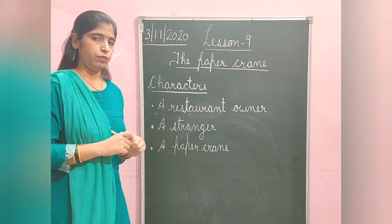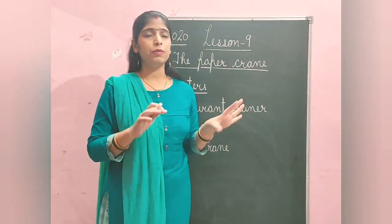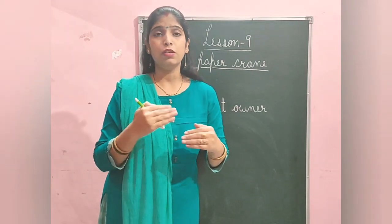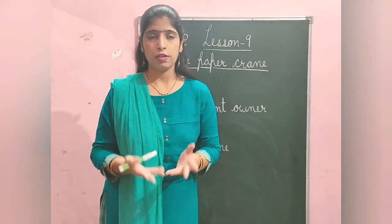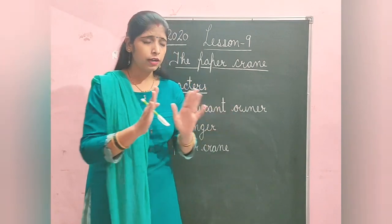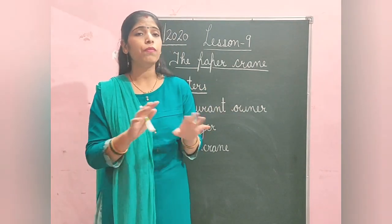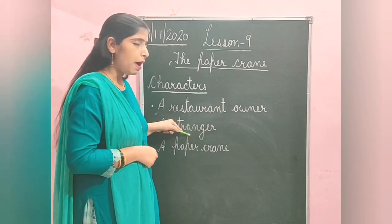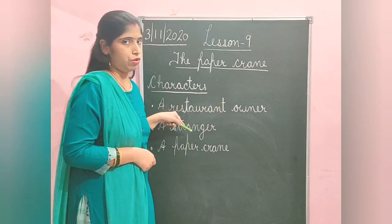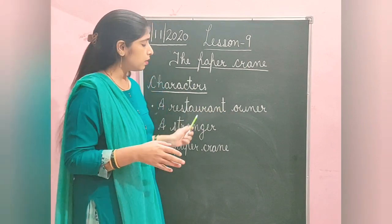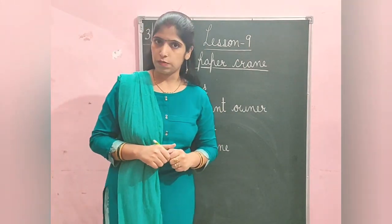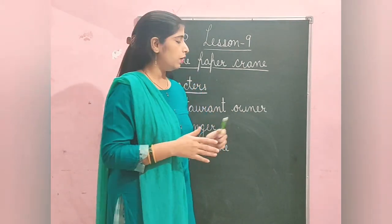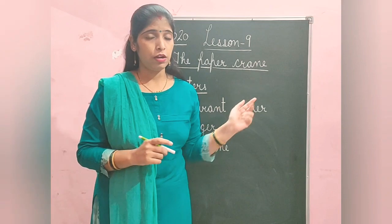Then there is the stranger — a person whom the restaurant owner doesn't know. The person we don't know is a stranger to us. This stranger is also a very gentle man. He was very poor and was not able to pay money for the food. He went to the restaurant owner's restaurant, but he was not ashamed of being poor.